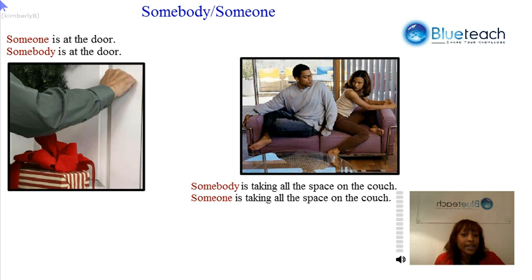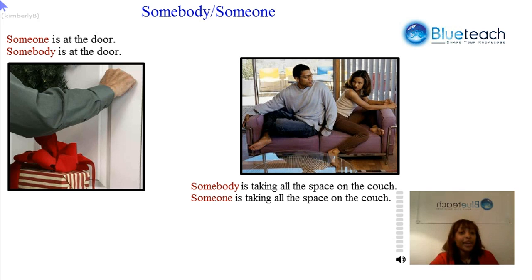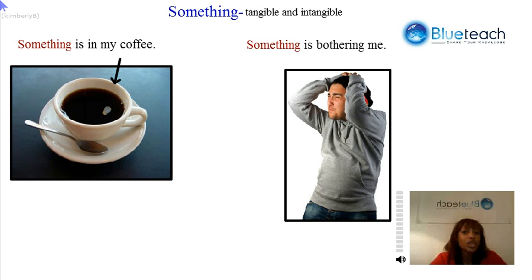In this example, 'somebody is taking all the space on the couch,' or 'someone is taking all the space on the couch,' means exactly the same thing. This is the sarcastic use I mentioned — we can use 'somebody' and 'someone' to refer to a person in the room without pointing the finger at a specific person. Even though we know who it is, we might say 'someone is taking up all the space on the couch,' referring to a particular person in the room without calling them out by name.